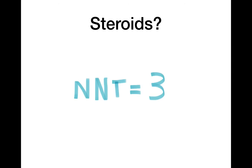Regarding steroids — the IDSA really discourages them, but the evidence for the use of steroids in children, adolescents, and adults in reducing pain from any kind of pharyngitis, either strep or viral, is quite strong. There's a Cochrane review that puts the number needed to treat at three, meaning you need to treat three people for one person to have marked improvement in pain. The standard dose is dexamethasone 0.6 milligrams per kilogram orally, with a max dose of 10 milligrams.